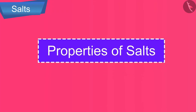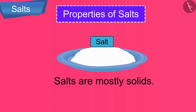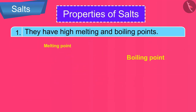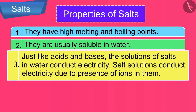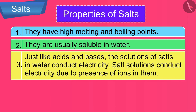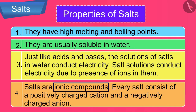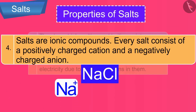Let us now discuss the properties of salts. Salts are mostly solids with a high melting and boiling point. They are usually soluble in water. Just like acids and bases, solutions of salts in water conduct electricity due to the presence of ions — salts are ionic compounds. Every salt consists of a positively charged cation and a negatively charged anion. For example, NaCl has Na+ cation and Cl- anion.